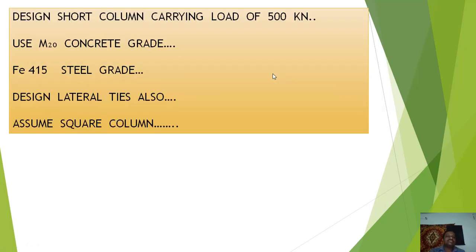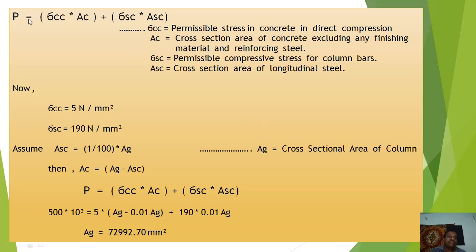Design a short column carrying a load of 500 kN. Use M20 concrete grade and Fe415 steel grade. Design lateral ties also. Assume the column is square. The total load formula is: P = σcc × Ac + σsc × Asc, where σcc is permissible stress in concrete in direct compression, Ac is the cross-sectional area of concrete, σsc is permissible compressive stress for column bars, and Asc is the cross-sectional area of longitudinal steel. As per IS 456, σcc = 5 N/mm² and σsc = 190 N/mm². Assume Asc = (1/100) × Ag.